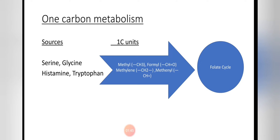Vitamin B9 is involved in one-carbon metabolism reactions, meaning it donates a carbon atom to a substance so a new substance can be formed. To gain this capability, folate first acquires functional groups containing one carbon atoms, derived from specific amino acids: serine, glycine, histidine, and tryptophan. These amino acids donate one carbon units in the form of methyl, formyl, methylene, and methanol groups.